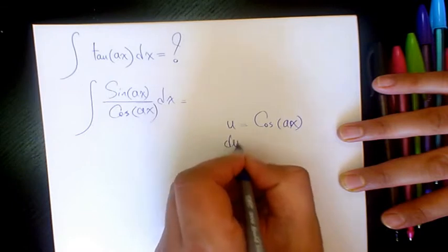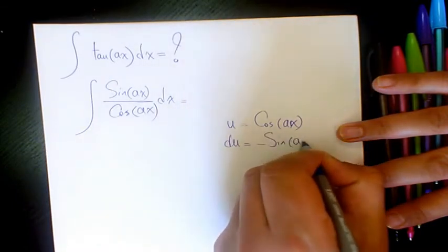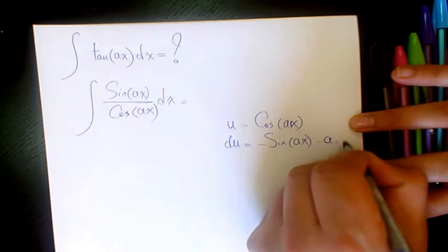So du will be negative sine ax times a times dx.